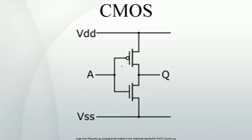The words Complementary Symmetry refer to the fact that the typical digital design style with CMOS uses complementary and symmetrical pairs of P-type and N-type metal oxide semiconductor field effect transistors for logic functions.